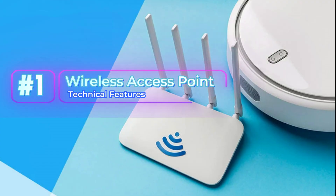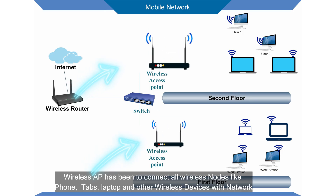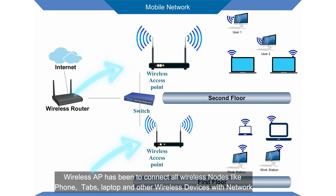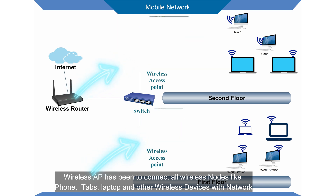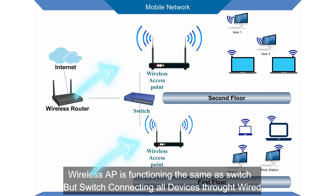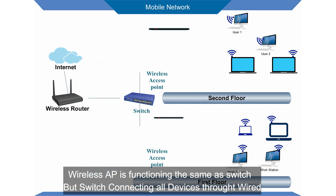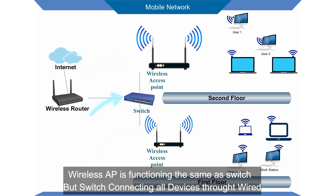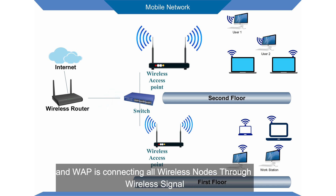Now let's look at the more technical features. A wireless access point has been built to connect all wireless nodes like phones, tablets, laptops, and other wireless devices with the network. A wireless access point functions the same as a switch, but a switch connects all devices through wired connections, while a wireless access point connects all nodes through wireless signal.